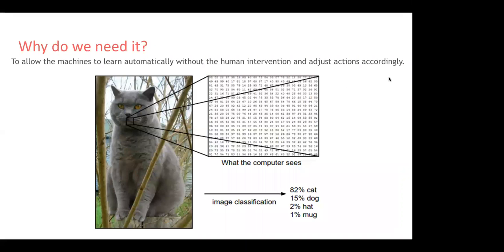One basic example is image classification, which is a very typical problem statement. You can't feed an image directly into the model — the image is pixelated. After doing image classification, the model gives a confidence score that determines which category the entity belongs to. For example, a cat image might score 82% cat, 15% dog, and the rest others.